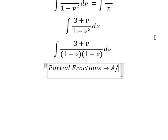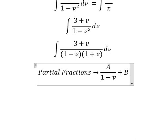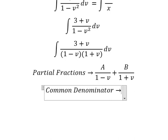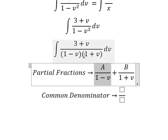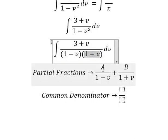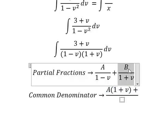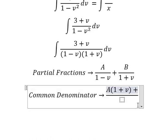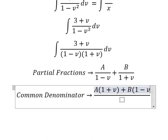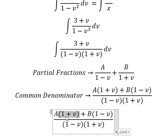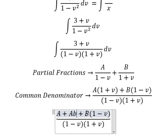For this denominator we can use partial fractions. So I will write A over (1 minus v) and B over (1 plus v). Now we find a common denominator. For the A term, the missing factor is 1 plus v, so we have A multiplied by (1 plus v). For the B term, the missing factor is 1 minus v, so we have B multiplied by (1 minus v). We expand: A plus Av, then B minus Bv.